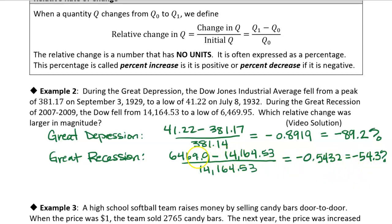So you can see, even though if you look at just the absolute change, going from 381 to 41 is a lot less than going from 14,000 to 6,469, right? You can see that the absolute change is actually greater for the Great Recession. But because the Dow was already at 14,164 at the beginning of the Great Recession, it lost less of its initial value. So you can see why the Great Depression was a lot more severe because 89%, when it was only at 381.17 to begin with, and it lost 89% of its value, then that was a lot more severe.